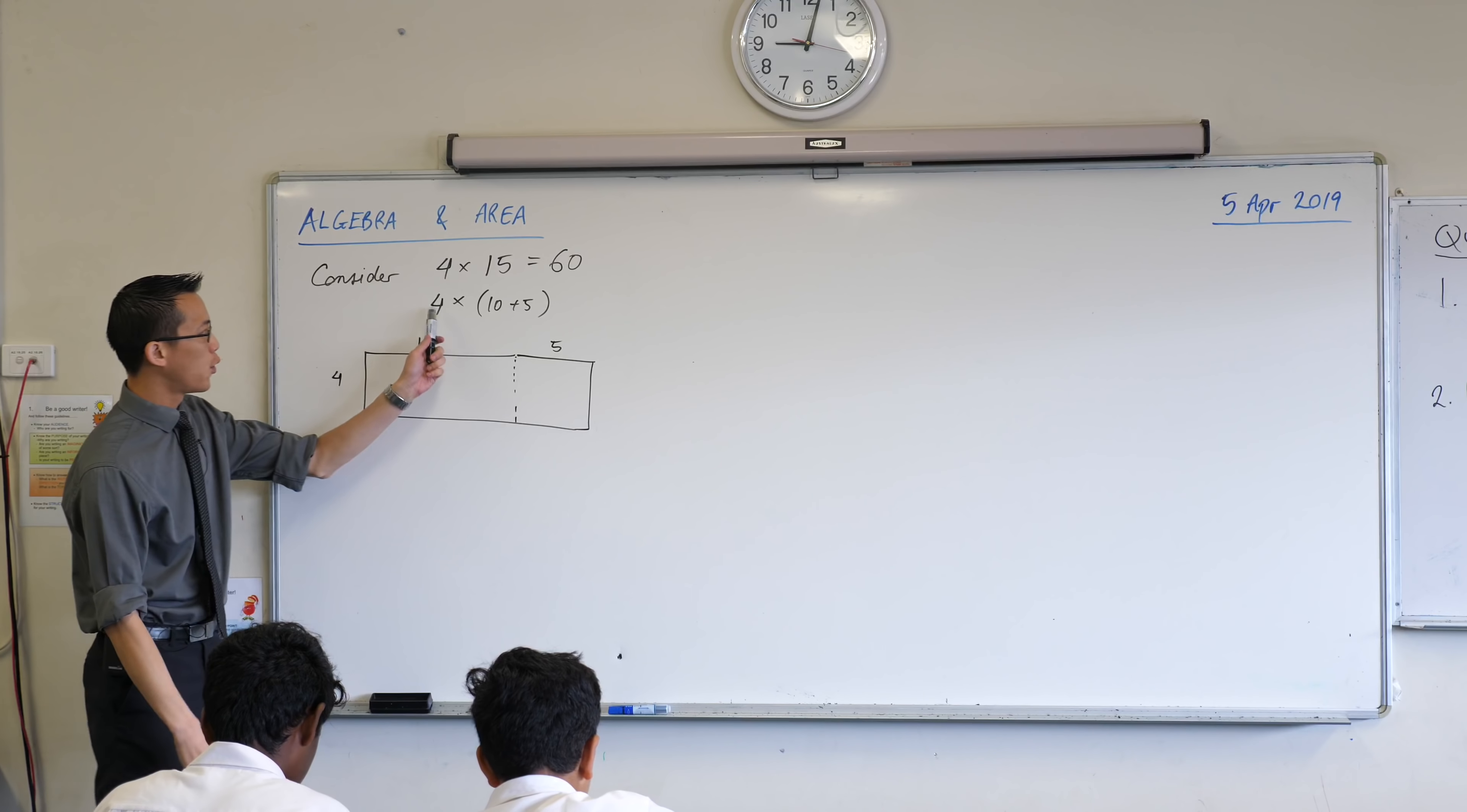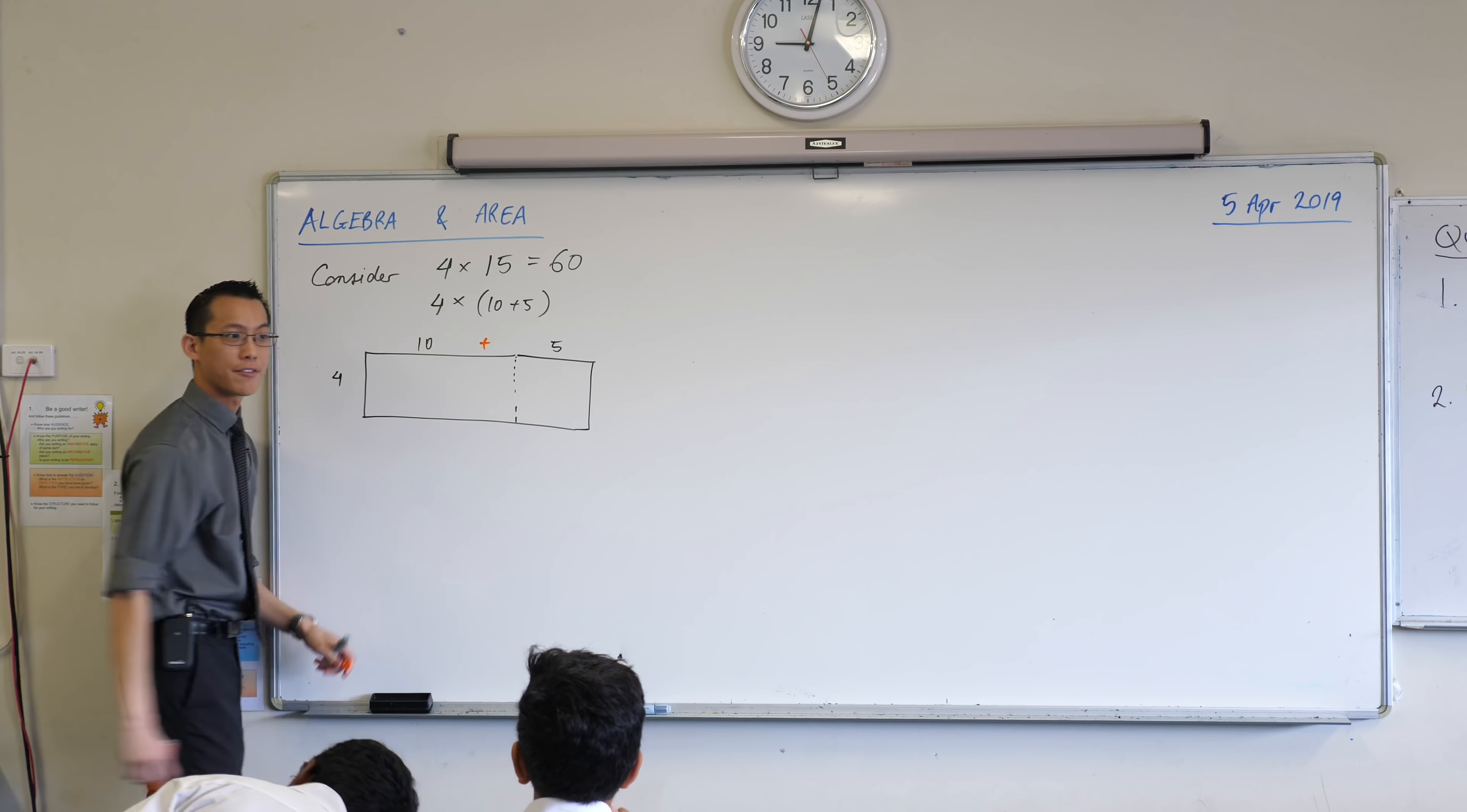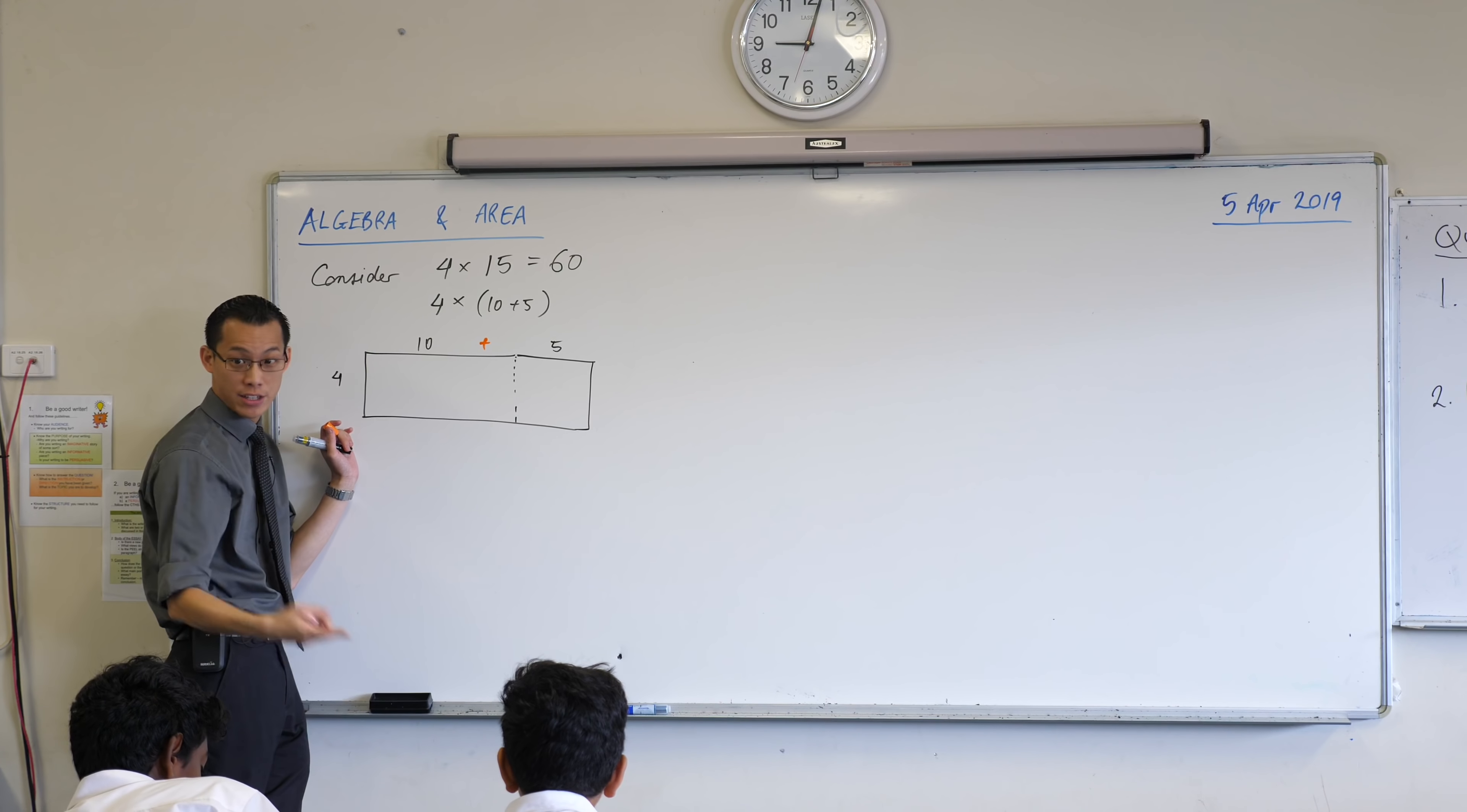If I think of 4 times 10 plus 5, I can say it's kind of like the area of this rectangle. 4 times 10 plus 5. And so the whole rectangle is in two pieces. Can anyone tell me this left-hand piece? What's the area of this side? It's going to be 40, right?